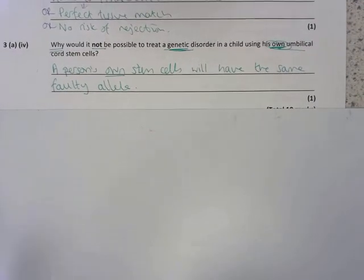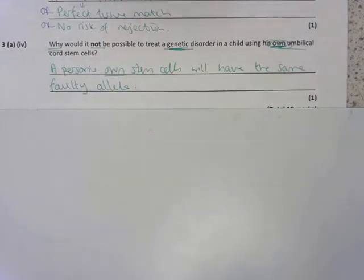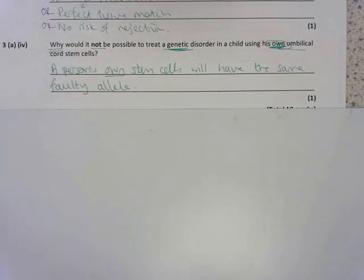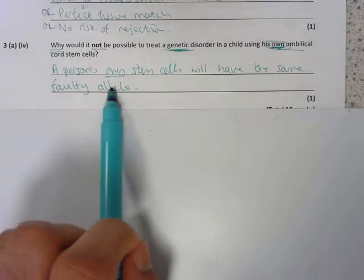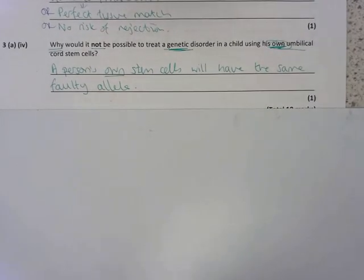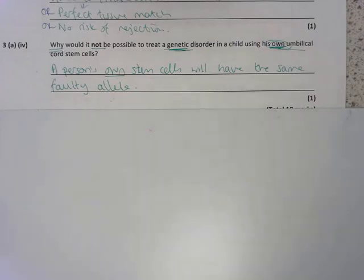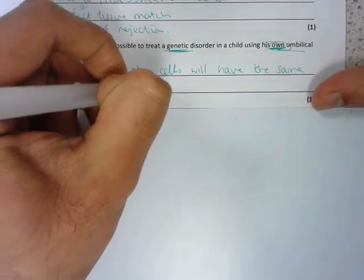3AIV. Why would it not be possible to treat a genetic disorder in a child using his own umbilical cord stem cells? Well, if you think about a child's own stem cells, they will also have the same gene or the same faulty allele that's causing the genetic disorder. So that's the mark for that question. Now, a common mistake with this question is that people sometimes say things like that the cells have the same genetic disorder, but cells don't have a disorder, the person does. So you can't say the cells have a genetic disorder. You can say the cells have a faulty allele or a faulty gene would also be acceptable. But remember, an allele is just a version of a gene.